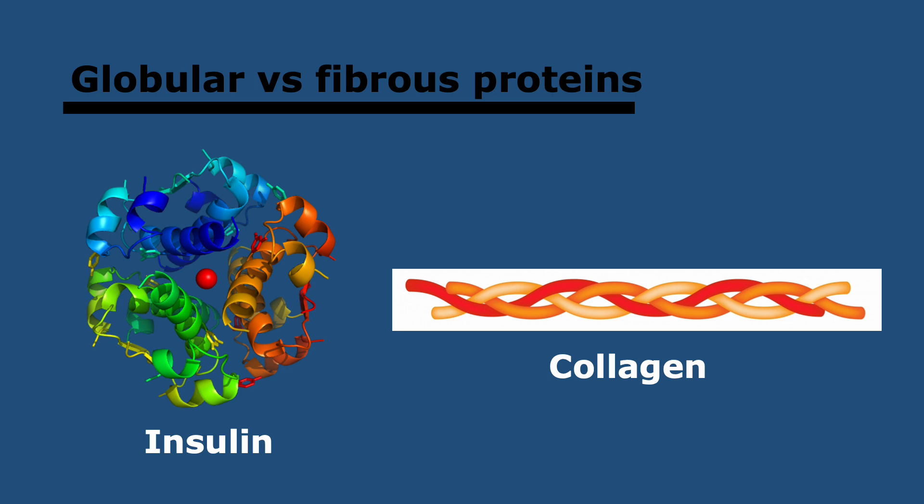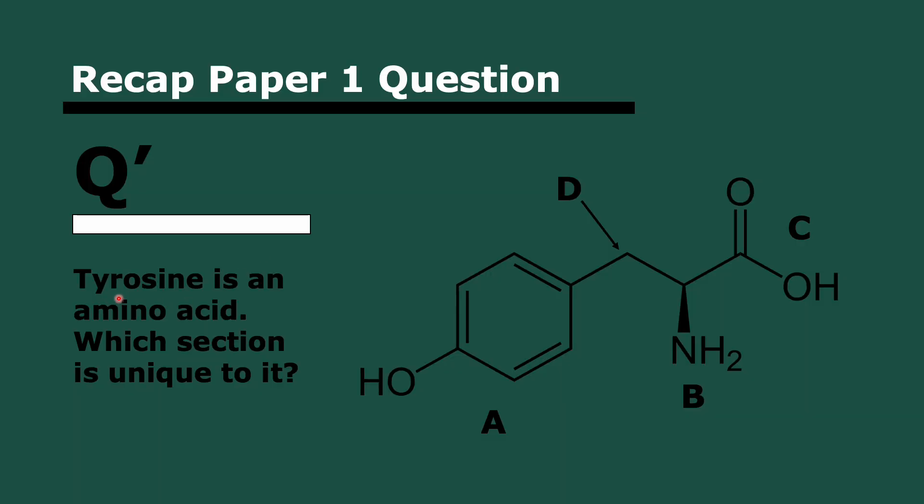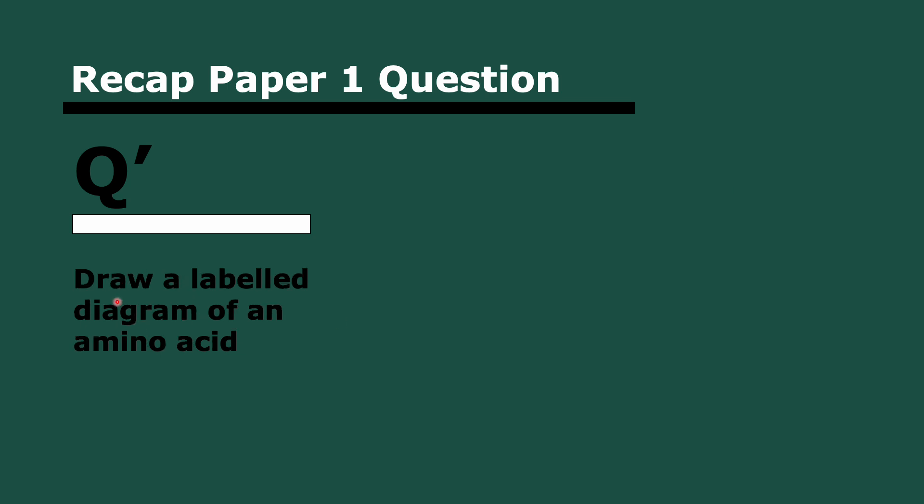That's a wrap to the content. I really hope that makes sense. I understand that the structure is quite confusing. Let's do some questions. Tyrosine is an amino acid. Which section is unique to it? Pause to think, but three, two, and one. This should be straightforward. It's A. The COOH is the carboxyl group, that doesn't change. The NH2, same thing, the amine group. The alpha carbon here also does not change, but the R group does change. This is what changes in every single amino acid. Then the second question is draw a labeled diagram of an amino acid. If you go back to slide number three, you've got it there, but try and draw it by yourself. And here it is. I don't think there's much explanation needed. This is something you just need to memorize.